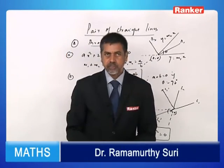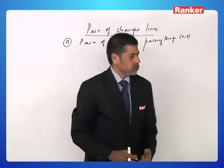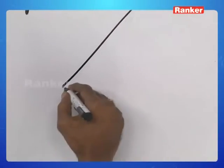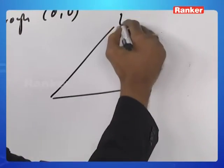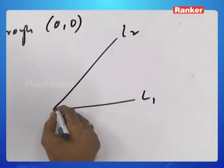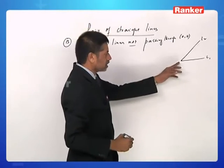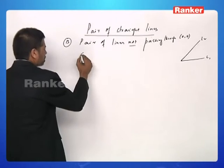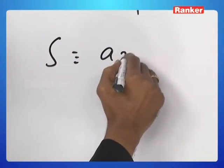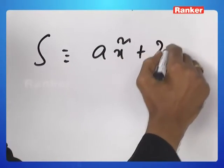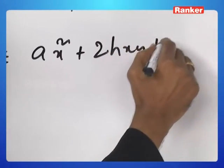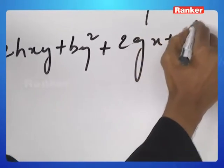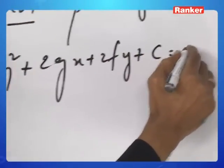Let us then go to the pair of straight lines not passing through the origin. Let us take a situation where we have a pair consisting of l1 and l2, but not passing through the origin. They are not intersecting at the origin. Such a pair of lines is given by the general form ax squared plus 2hxy plus by squared plus 2gx plus 2fy plus c equals 0.